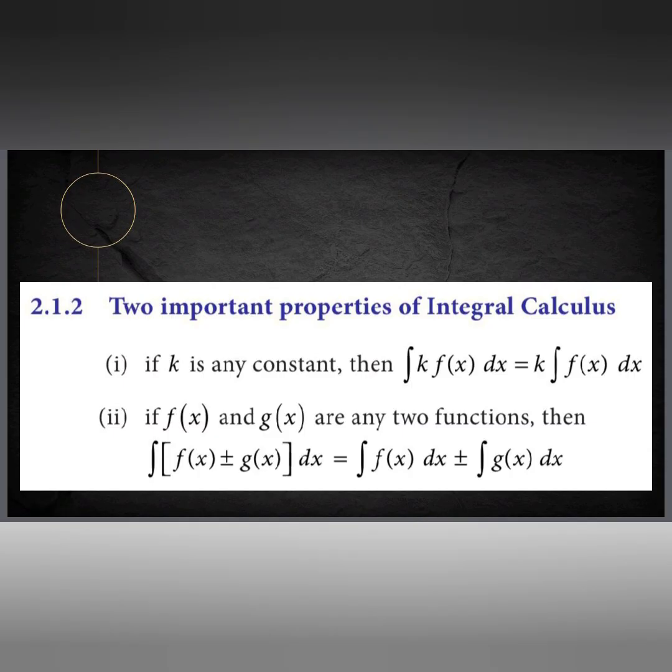Now, two important properties of integral calculus. If you have a constant along with a function — for example, 2x — you can write the 2 outside the integral symbol, integrate the x, and then write it together. Similarly, if f(x) and g(x) are combined with a plus or minus sign, you can split them along with the integral symbols.